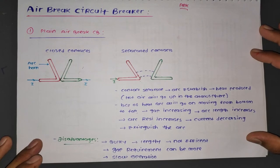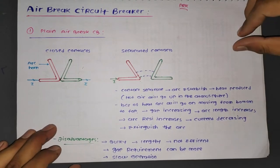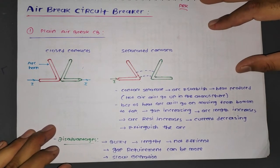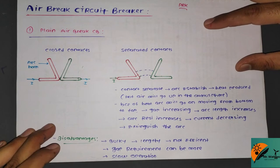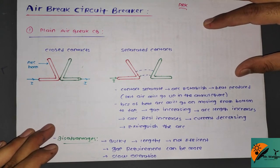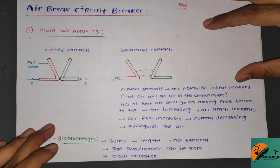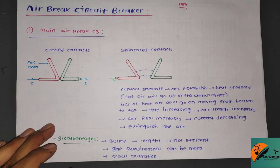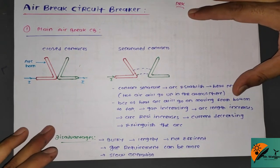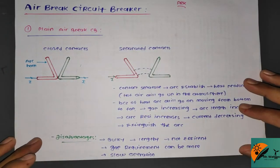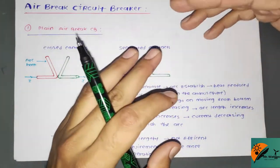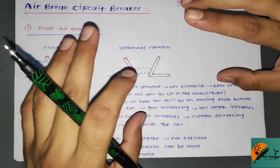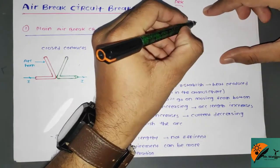Hello and welcome friends. In this particular video we are going to learn about the air brake circuit breaker, which is the first type of circuit breaker we are going to discuss. The first type is the plain air brake circuit breaker. Before proceeding further, I would like to mention some points useful for further study. In air brake circuit breakers, atmospheric pressure air is used as the arc extinction medium.